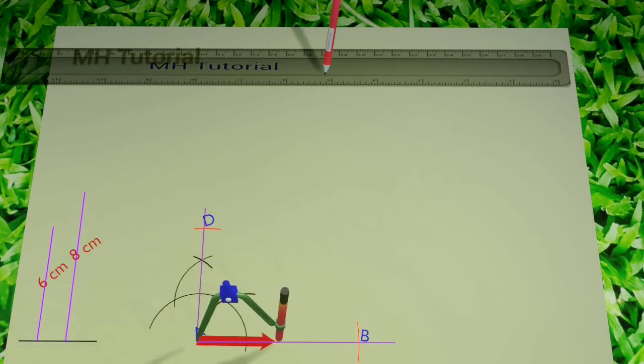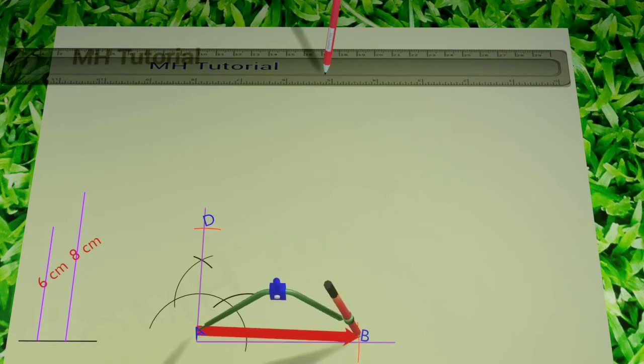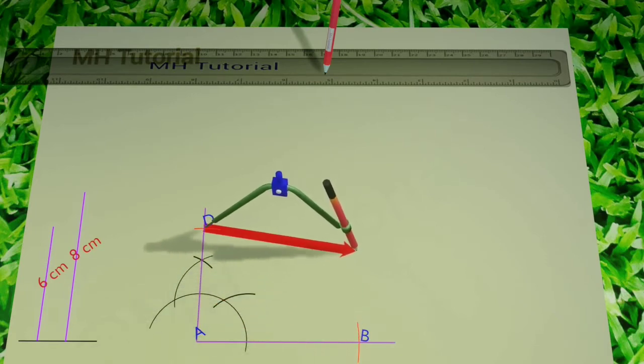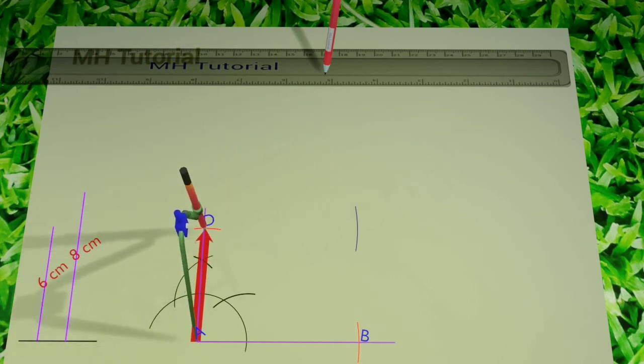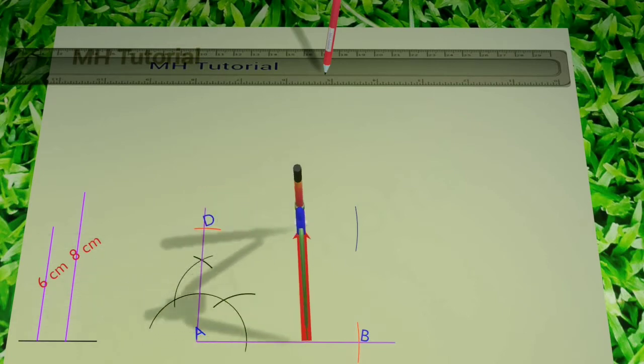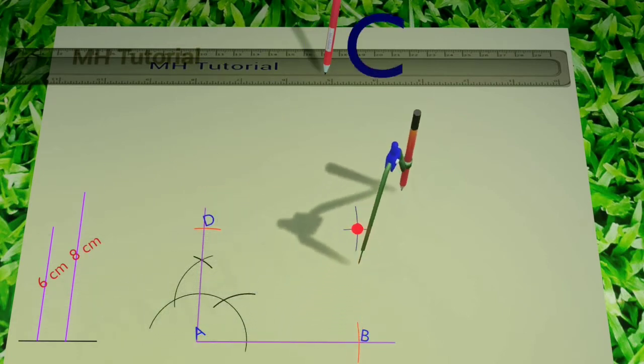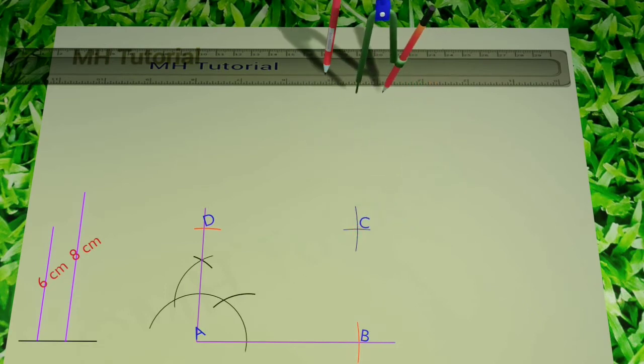Now with the help of compass, the length of the arm AB is taken and a circle arc of that size is drawn from point D. Again, the compass is used to measure the length of arm AD, and a circle of that size is drawn from point B. These arcs intersect each other at point C.